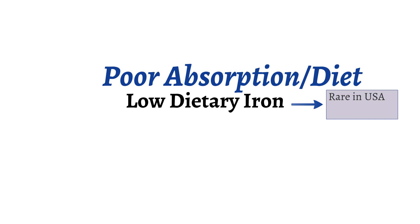Iron deficiency anemia occurs through poor iron in the diet, poor absorption, or blood loss, as blood contains a significant amount of iron. Iron deficiency due to diet alone is extremely rare in the U.S., but is seen in other countries where resources may be scarce. It may also be seen with vegetarians who have a less readily available source of iron in their diet. Iron deficiency anemia can also be due to absorption issues.